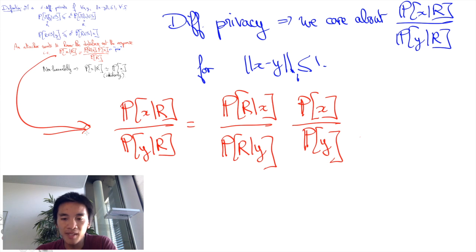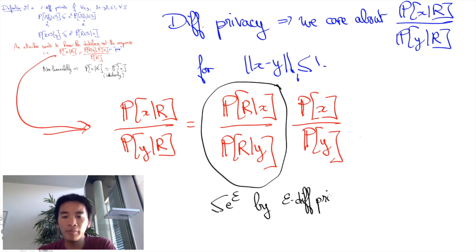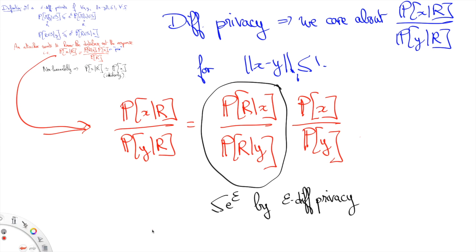Finally, we see appearing the ratio of responses conditioned on databases, which ε-differential privacy bounds by e^ε. In fact, ε-differential private mechanisms are precisely those that always guarantee that the posterior ratio of beliefs of neighbor databases never increase too much compared to the ratio of beliefs a priori. In gambling terms, this can be written as the odds of x to y given R is, at most, e^ε times the odds of x to y.